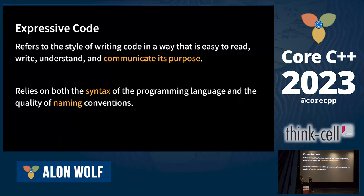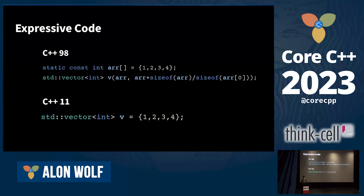Expressive code is code that communicates its purpose in a way that is easy to read and write. It depends on two things: the syntax and naming. In this talk we will focus more on the syntax part. Here we have two examples of code that creates a vector with four integers. As the language evolves, we get more features that help us write more expressive code. In the C++11 example, the code is easier to read and has less boilerplate.